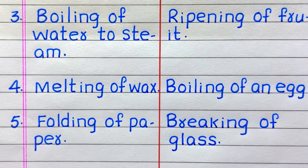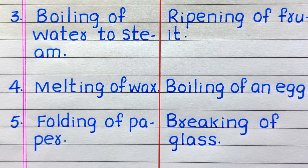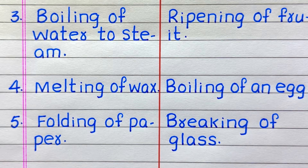Third example of a reversible change is boiling of water to steam. Fourth, melting of wax. Fifth, folding of paper.